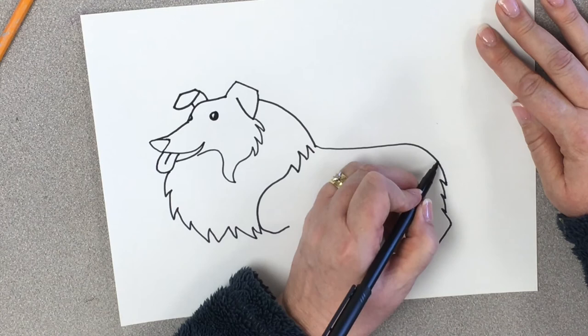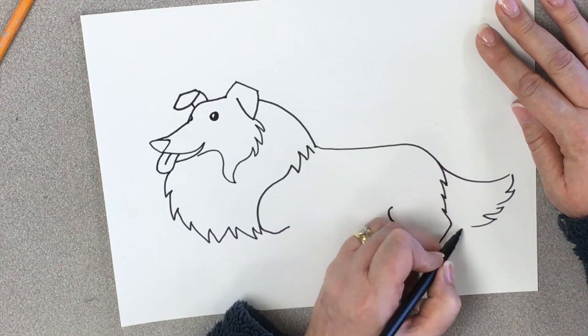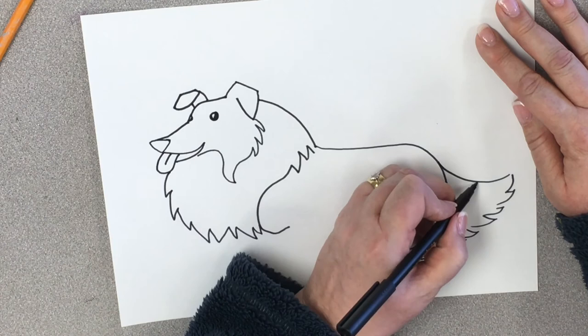And then there's the tail. It's just going to swoop back and have some little zigzags because this is a hairy little dog. And then we've got a different color in here. So we'll put a line there.